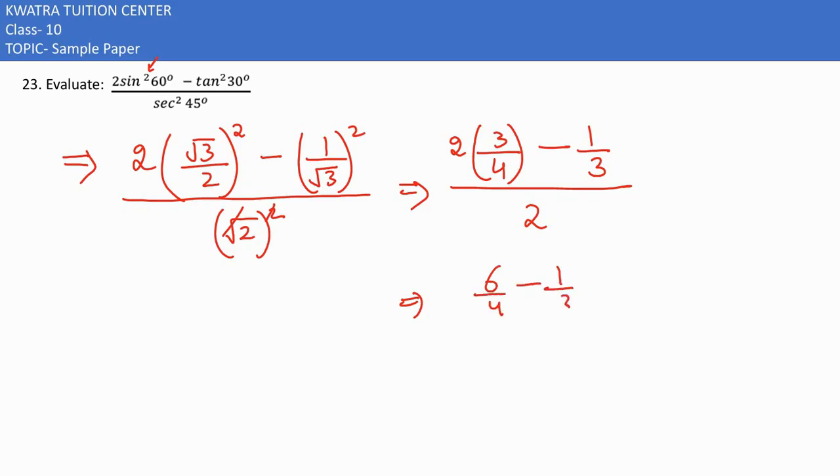And then I have 1 by 3 divided by 2. So what do you have to do? You need to take the LCM of the numerator. This would be 12. And first term would get multiplied with 3. This is 18. And then you would have the next number as 4 divided by 2. Now 18 minus 4 is 14.